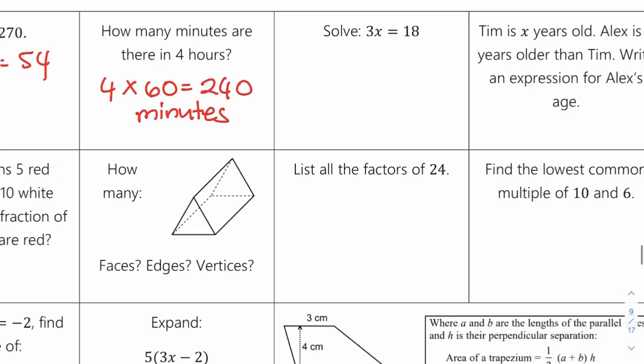Solve 3x equals 18. So divide by 3 on both sides — divided by 3, divided by 3 — so x is equal to 6.